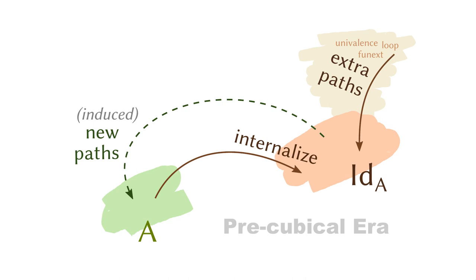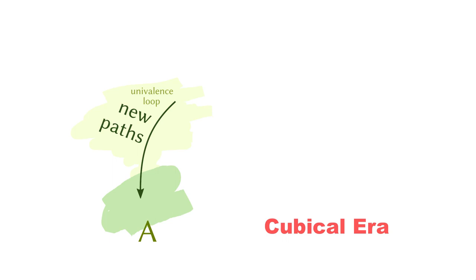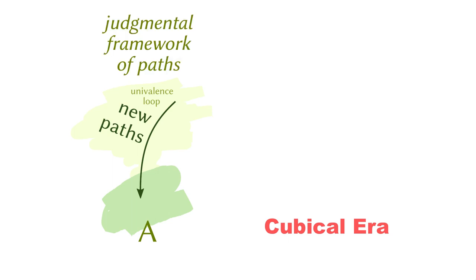So in cubical type theory, we are going to forget about the identification types. We are going to add these paths directly into the types in question — adding univalence into the universe directly, adding the loop into the circle directly, without going through the identification types. But in order to do so, we need a judgmental framework to talk about these paths without the help of identification types. And that's why we are putting the intervals in the context, because by doing so we can talk about these new paths.